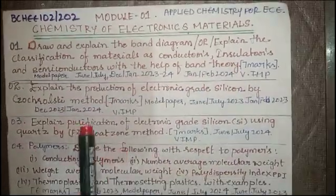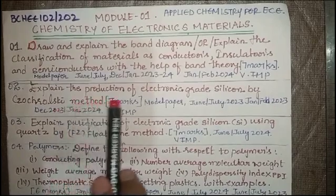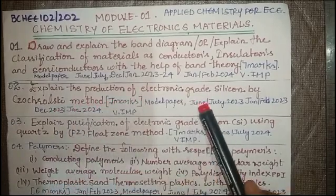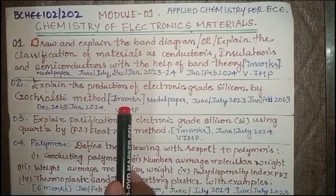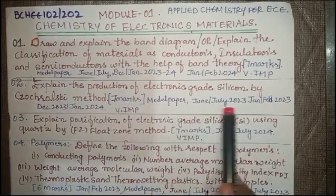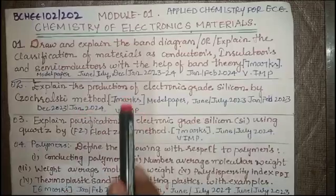Next, question 2 deals with: explain the production of electronic grade silicon by Czochralski method. This has been asked for seven marks. You can see where they have been asked this question, which is a super important question and you can expect this question for the exam.